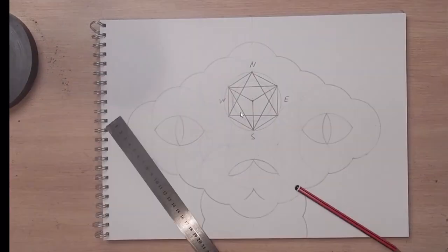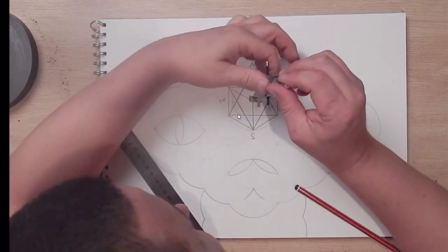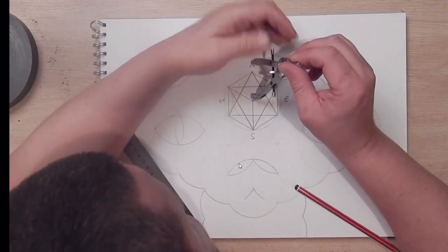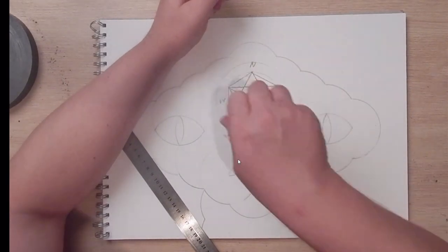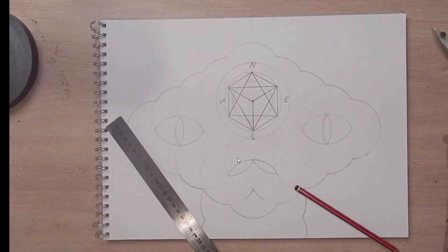So I've drawn the Tropic of Cancer, now I'm drawing the Tropic of Capricorn. Which is like I said, a lotus leaf, a leaf seed distance away from the equator. That's the Tropic of Capricorn.